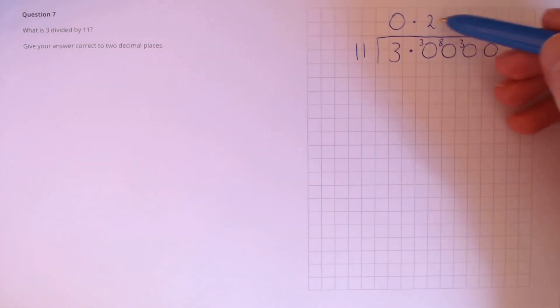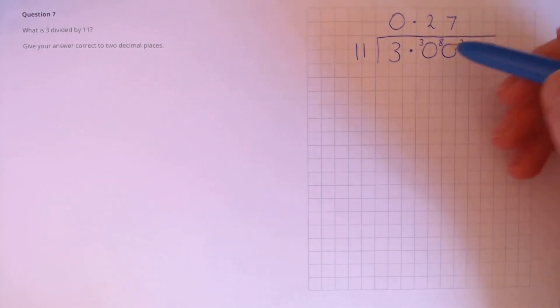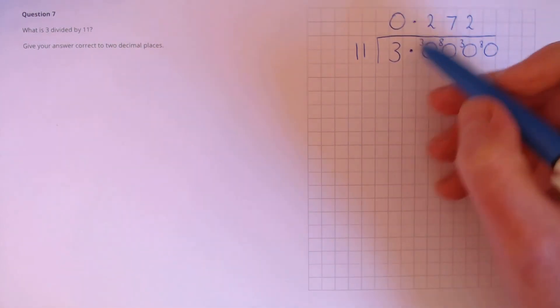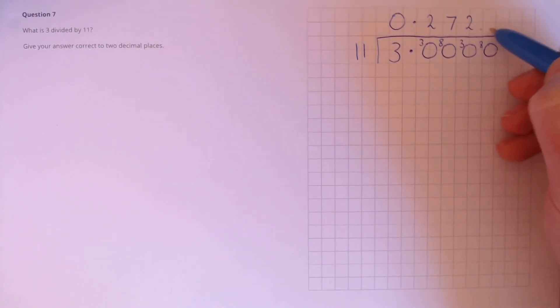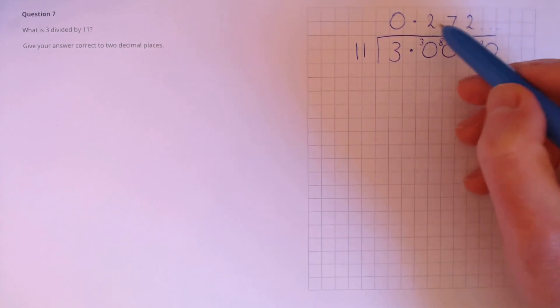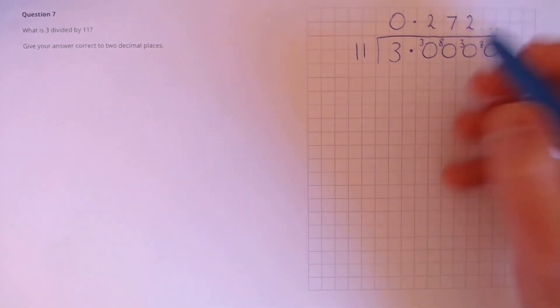We need this to two decimal places so we've got two decimal places so far. We just need to find this one here just to make sure that it doesn't round up. So 30 divided by 11, we know from before that's 2, remainder 8. So our answer is 0.272 and then this will continue but we don't need any more. 0.272 to two decimal places is just 0.27.